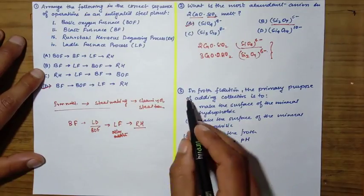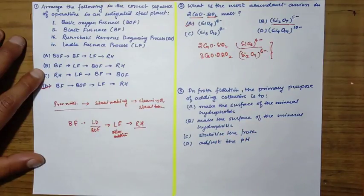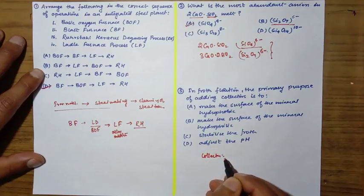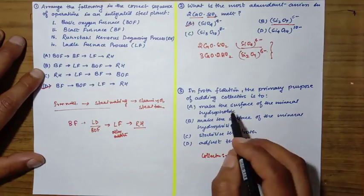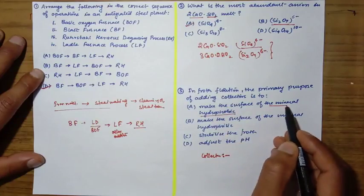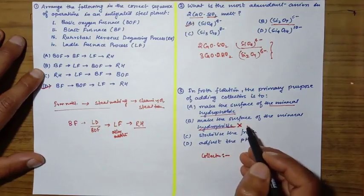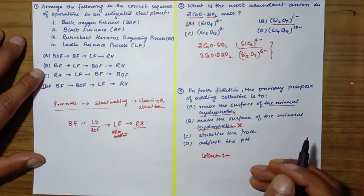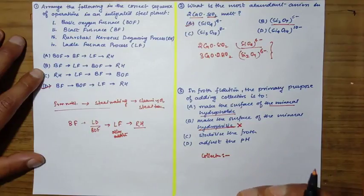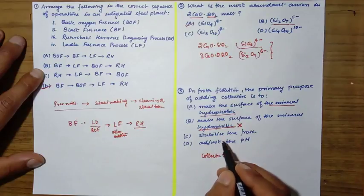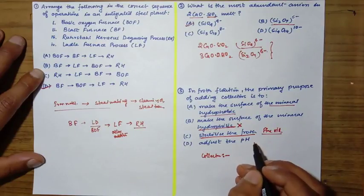Third question: in froth flotation, the primary purpose of adding collector is what? Let's check the options. Make the surface of the mineral hydrophobic - yes. Make it hydrophilic - no, because if it's hydrophilic it will dissolve with water and there will be no sticking of the mineral to the bubble.